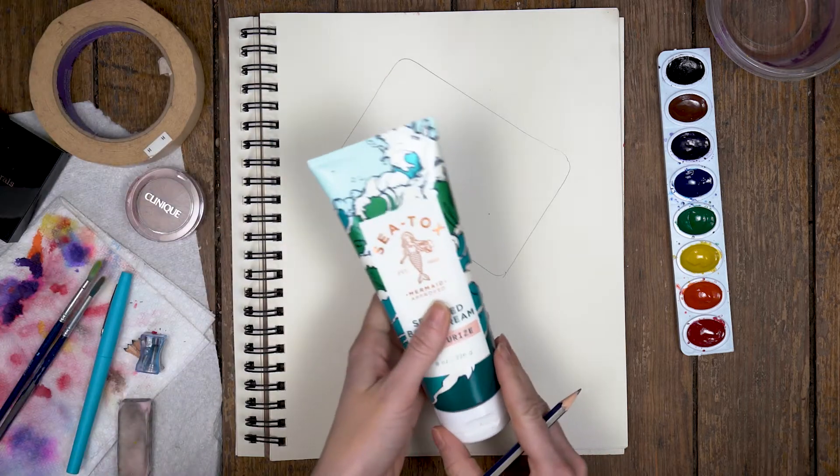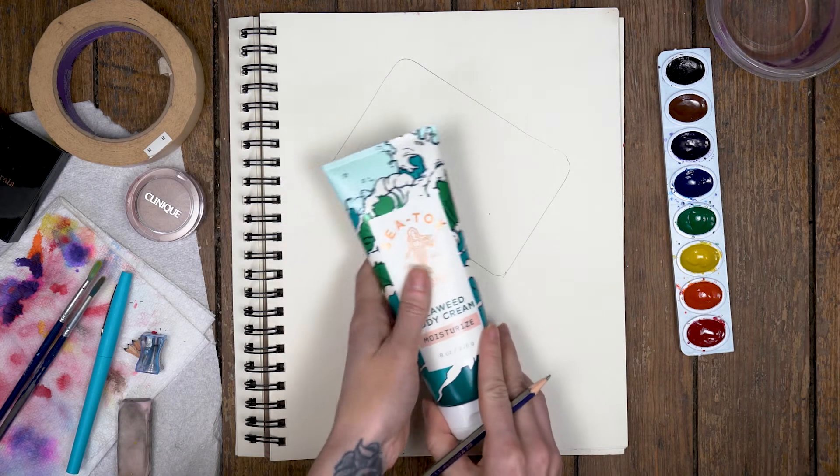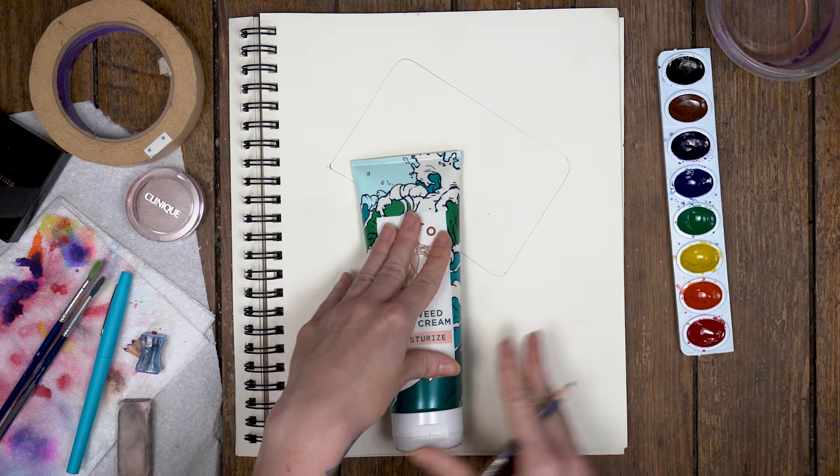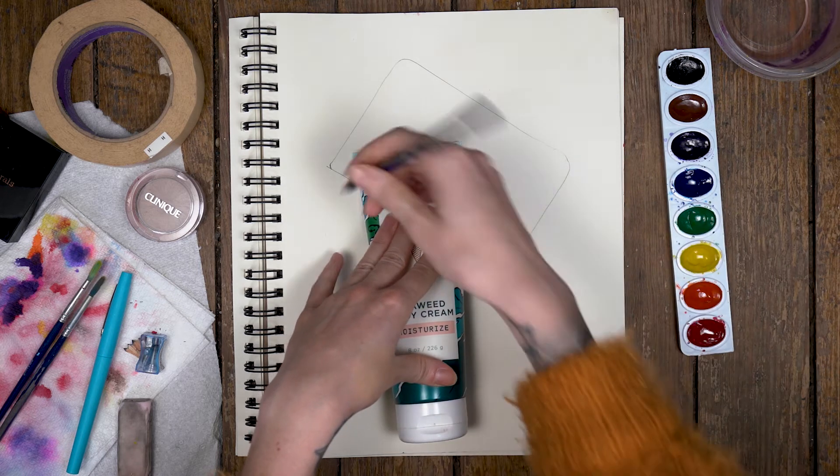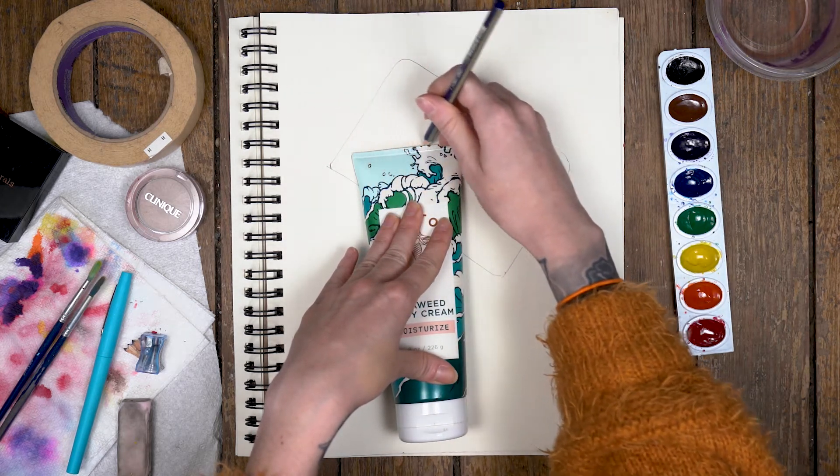Then I'm going to go for my next shape. I'm paying attention to shapes that I find interesting, and it's okay if they overlap. We actually want them to overlap. That's where it gets fun when it comes to coloring.